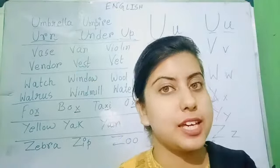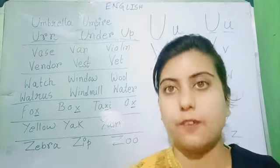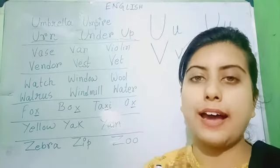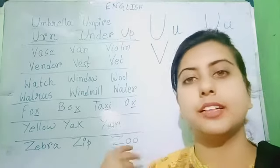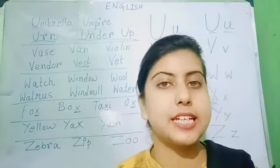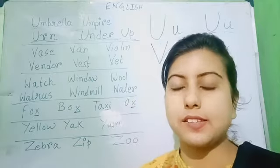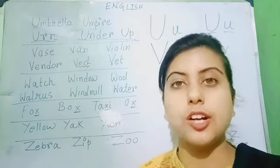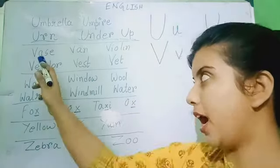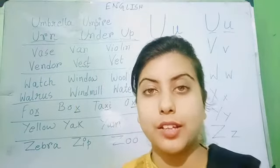Next, vest. V-E-S-T. Vest. Vest is a cloth that we wear under the shirt. Vet. V-E-T. Vet. Vet is the doctor of animals. So the words with V are: vase, van, violin, vendor, vest, vet.